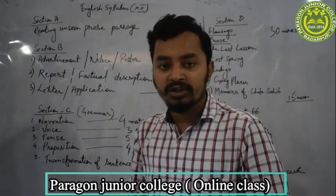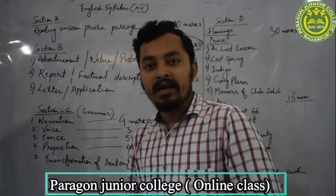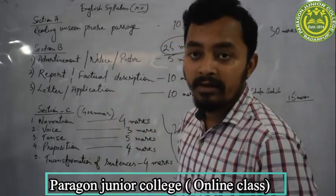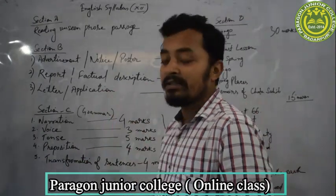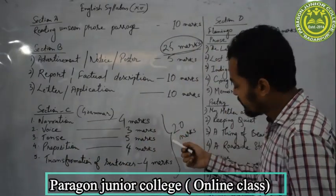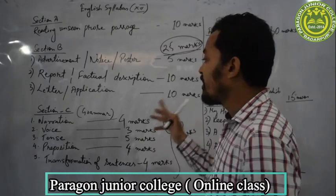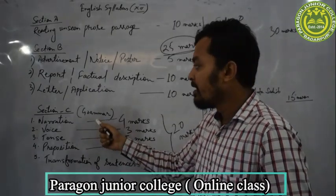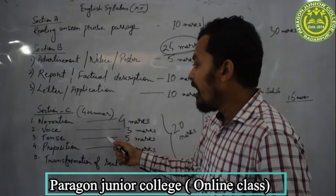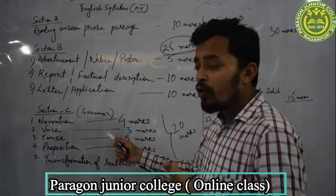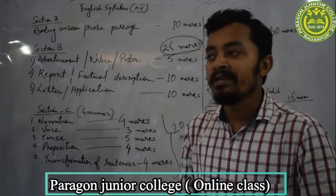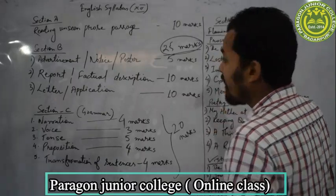Most topics of class 12 English are there from class level and I am sure you are taught nicely and perfectly. But still we will again revise and discuss. Section C consists of 20 marks and it is very very easy to score 20 upon 20 in Section C Grammar. The thing is that you have to practice at home and you have to know the rules of grammar rather than memorizing the sentences.